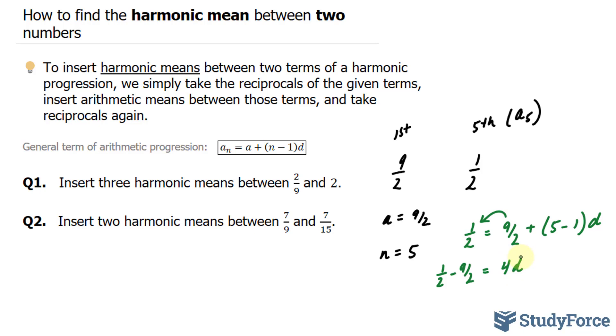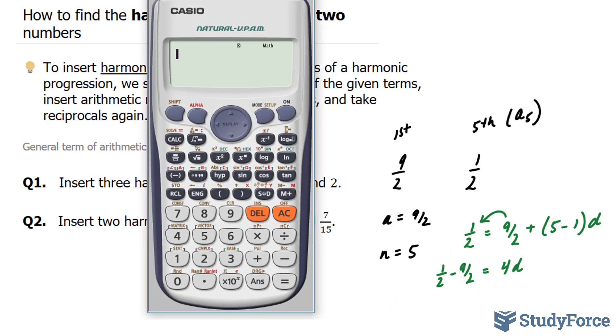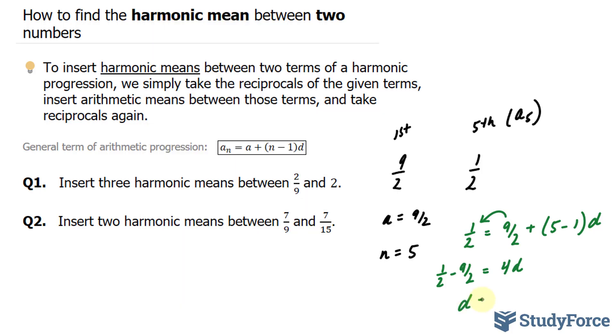We'll divide both sides by 4 once we have reduced these two fractions. 1 over 2 minus 9 over 2 divided by 4. Which gives us d is equal to negative 1.